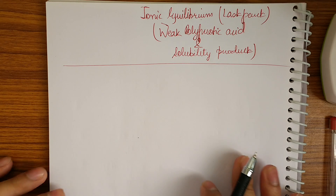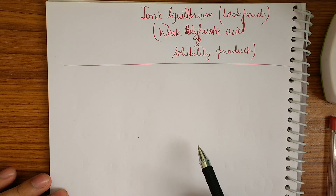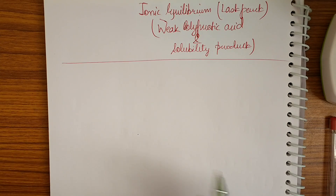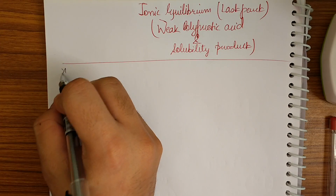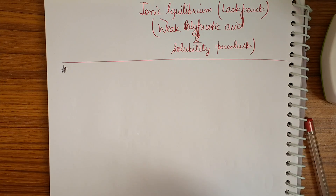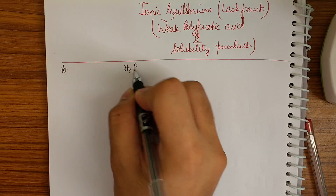This is the last part of ionic equilibrium, where we'll be dealing with weak polyprotic acids and the solubility product. Let me focus on the polyprotic acid first.